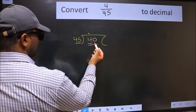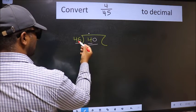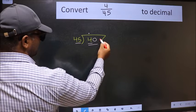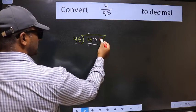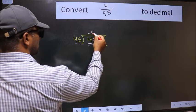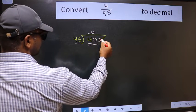So 40. 40 is still smaller than 45, so we should get one more 0 here. And the rule to get 0 here is, put 0 here, then we can get 0 here.